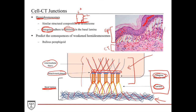Another clinical implication of hemidesmosomes is that when cancer cells start to invade and migrate into the underlying connective tissue, it usually involves disintegration of the hemidesmosomes as well as the desmosomes, causing breakdown of the basement membrane so that cancer cells can migrate down into the connective tissue and metastasize. So these cell-cell junctions and cell-to-connective tissue junctions have important implications in tumor invasion, migration, and metastasis.